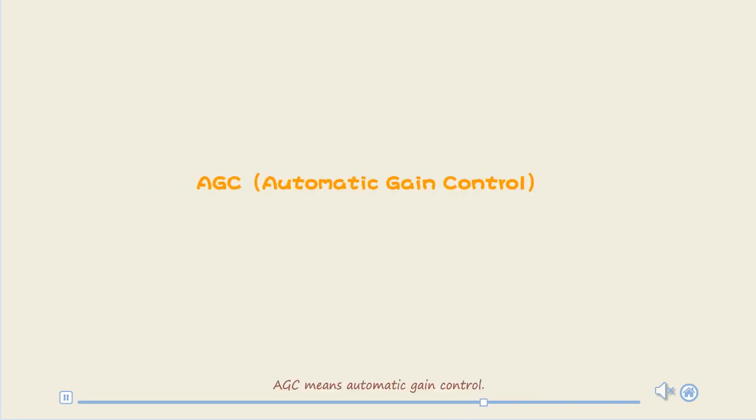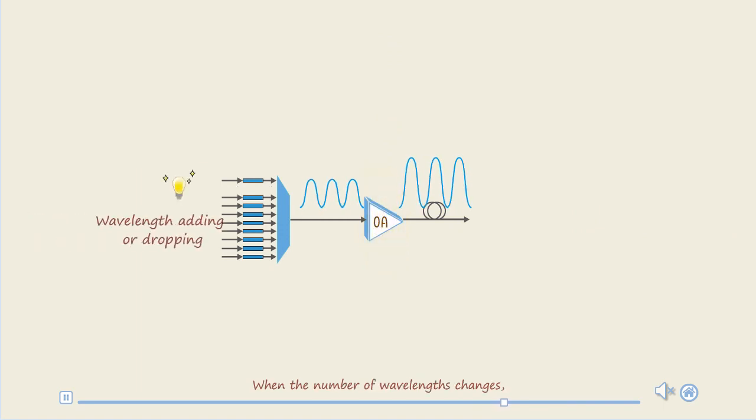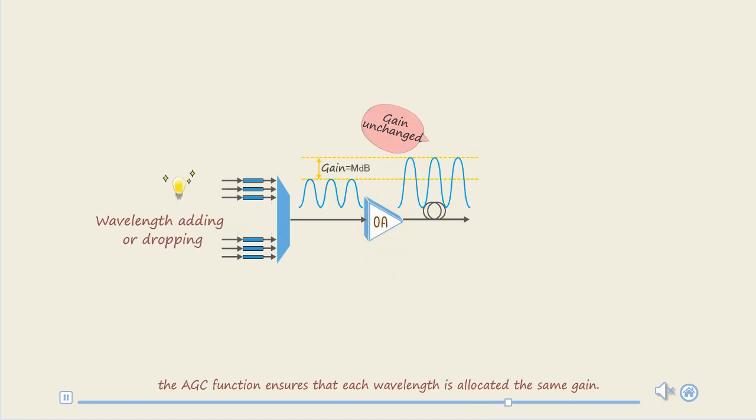AGC means Automatic Gain Control. It is a technology used by optical amplifier boards. When the number of wavelengths changes, the AGC function ensures that each wavelength is allocated the same gain.